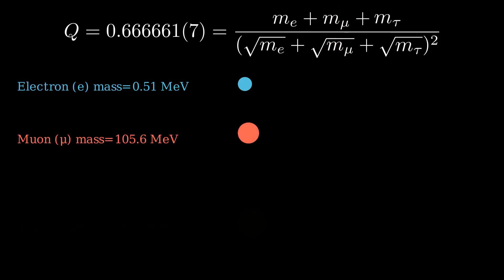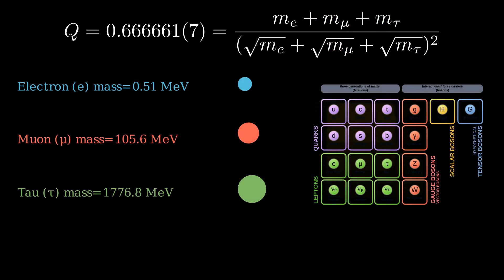The electron, muon, and tau. These particles are integral components of the Standard Model of particle physics, which serves as the current framework for understanding fundamental particles and the forces controlling their interactions in the universe.